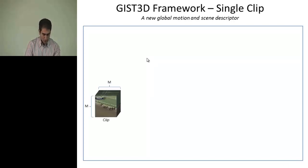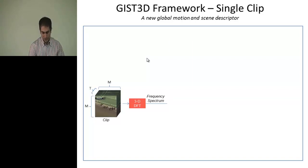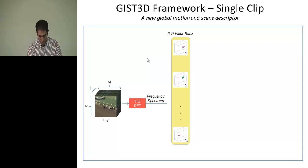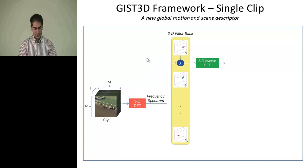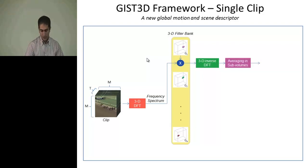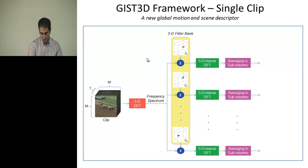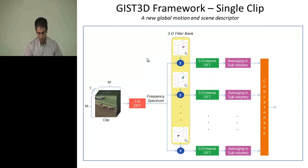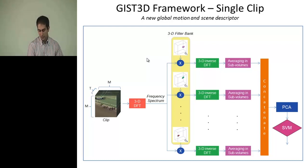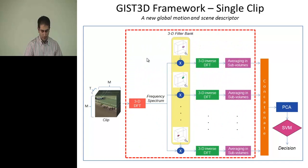Here is our framework. Given a video clip of size M by M and T frames, we first compute the 3D Fourier transform. We have a 3D filter bank with N filters. For each filter, we multiply our filter with the frequency spectrum, obtaining a cube of the same size as the input clip. We then compute the inverse transform, divide the cube into uniformly sized subvolumes, and do quantization in each of them. After processing all filters, we flatten and concatenate these numbers, then apply dimension reduction using PCA and train a support vector machine.